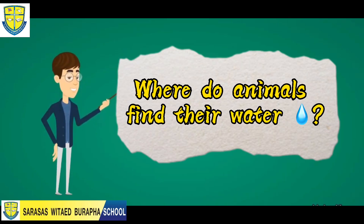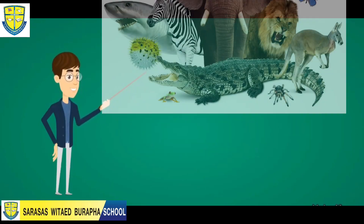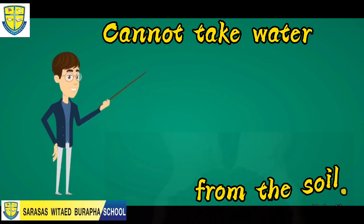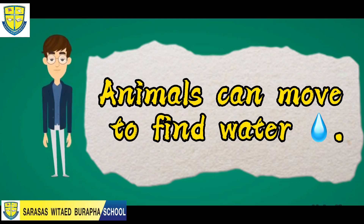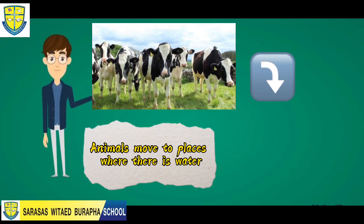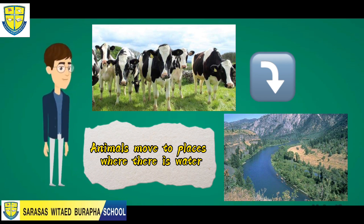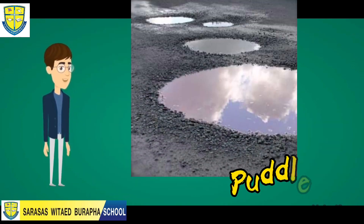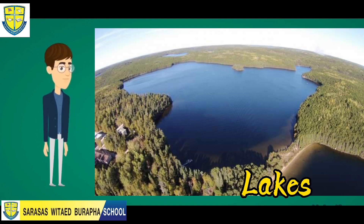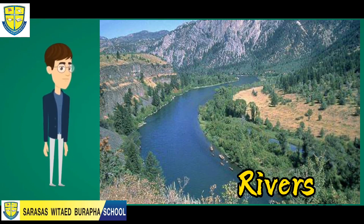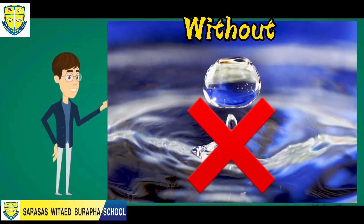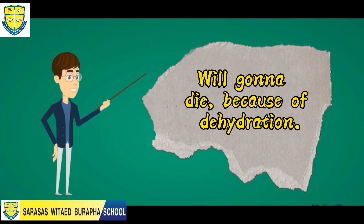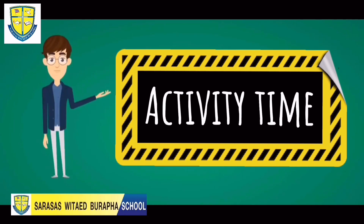Next, where do animals find their water? Animals cannot take water from the soil, but animals can move to find water. Animals move to places where there is water. Water is important to all living things, because without water all living things will die from dehydration. Now we're ready to answer your activity.